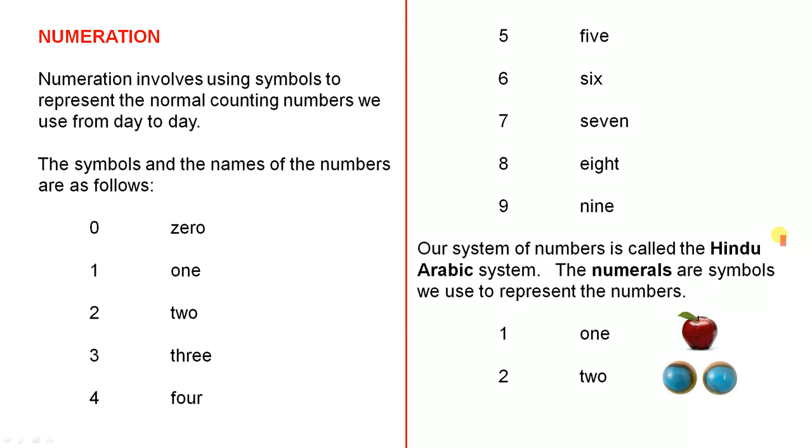Our system of numbers is called the Hindu-Arabic system. The numerals are symbols we use to represent the numbers. In other words, these are the numerals and they're actually symbols, but they stand for something. They stand for the number 1, which means 1 apple. This symbol here, which is a numeral, stands for the number 2. And in real life, for example, that represents 2 marbles.